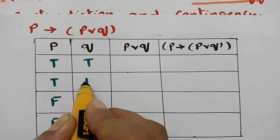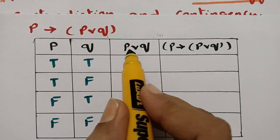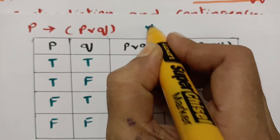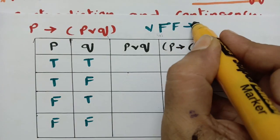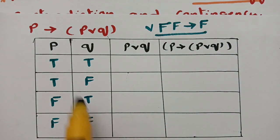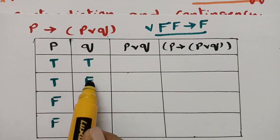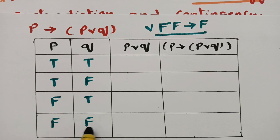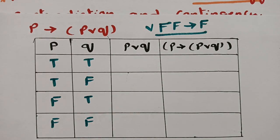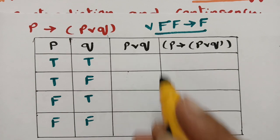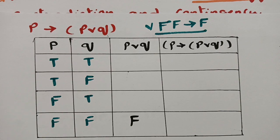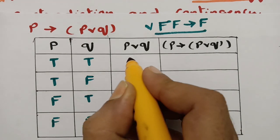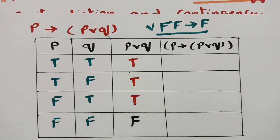For the disjunction (or) symbol, the logic to remember is: if there are two false values, immediately write false; the rest are all true. So for P or Q: true or true is true, true or false is true, false or true is true, and false or false is false.